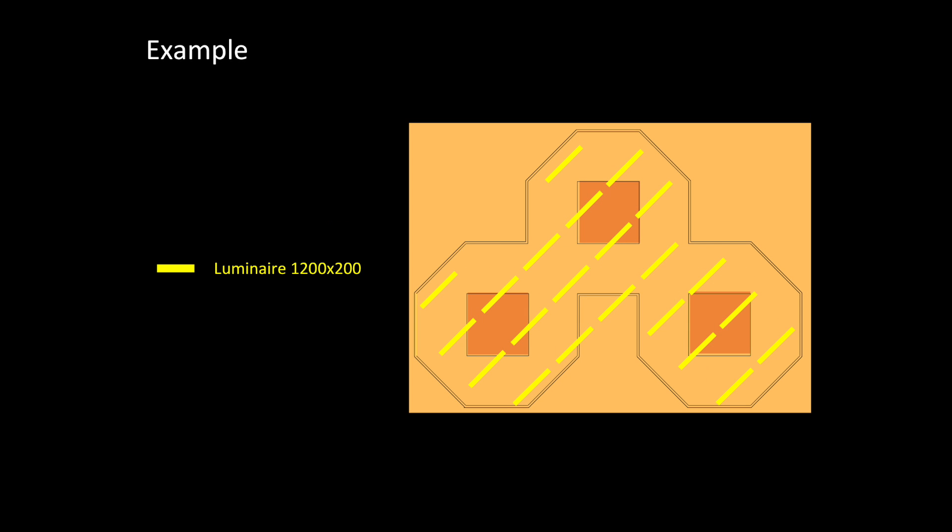Using a linear luminaire there are a number of possible ways of arranging them. Lines give direction, make the space look longer and narrower, and do not tie up with the overall shape of the building.